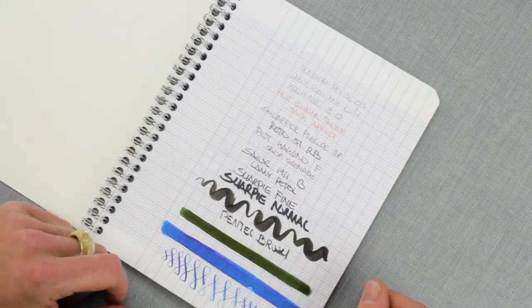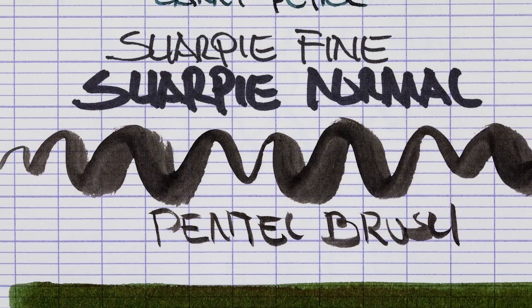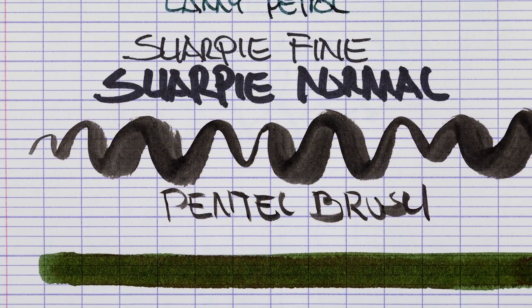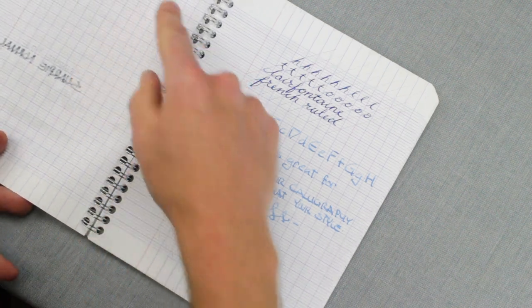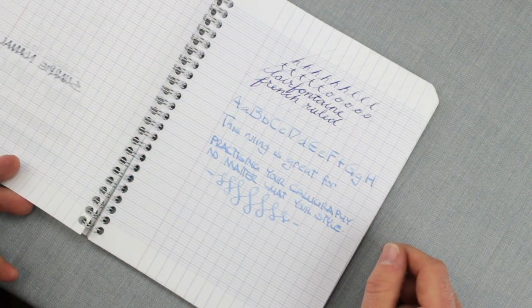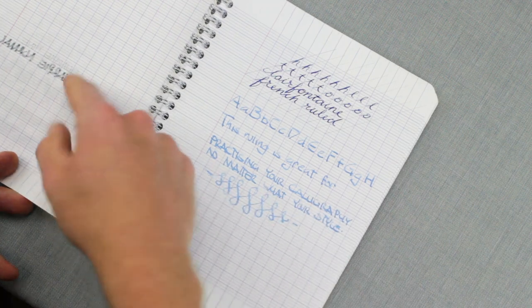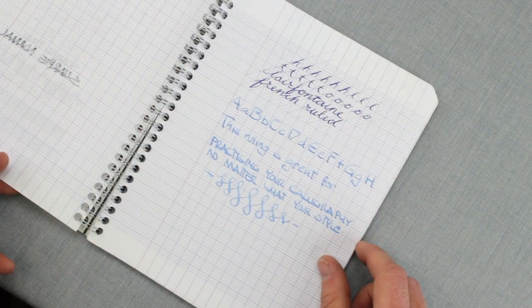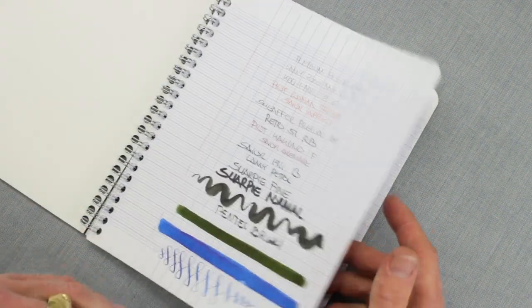As you can see here, the normal suspects as far as writing instruments, the paper just did fabulous with. Absolutely no bleed-through or show-through for any of your normal writing instruments. Sharpies, there's a little bleed-through, but overall just great paper.